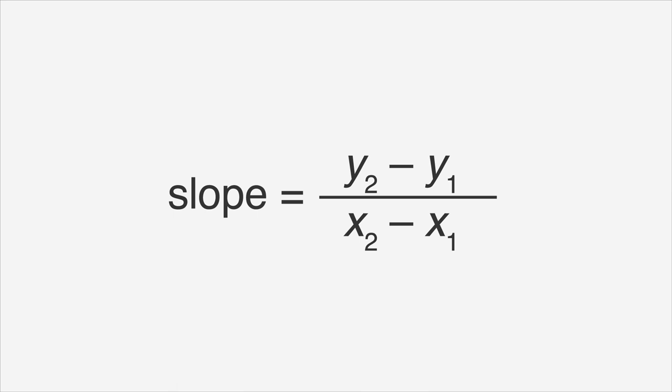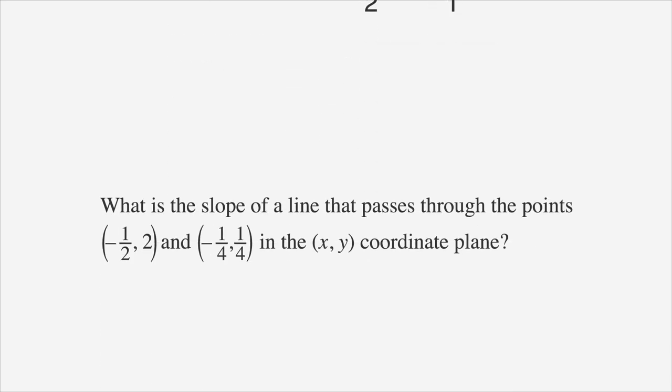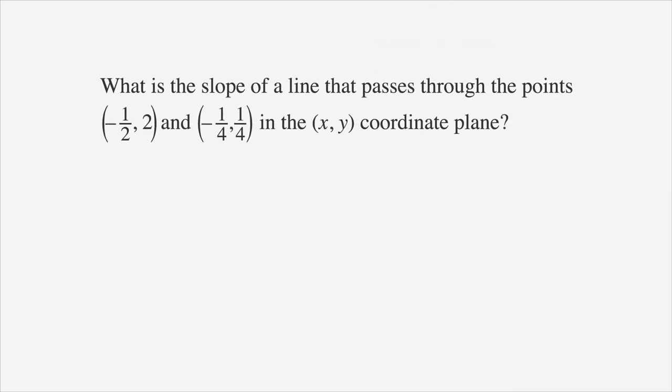The point-slope formula is slope equals y2 minus y1 over x2 minus x1. Let's bring up an example ACT problem and solve it using the point-slope formula. What is the slope of a line that passes through the points negative one-half, two, and negative one-quarter, one-quarter in the x-y coordinate plane?